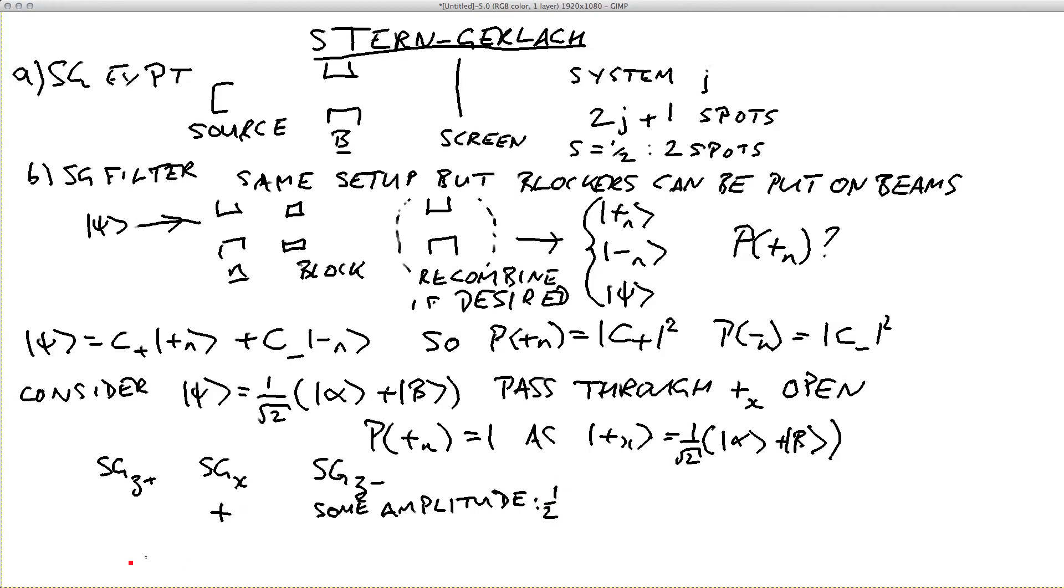If there is no blocker on the Stern-Gerlach filter in x, then the amplitude at the end will be zero. Because we will have started with a state in plus z, we will pass through the Stern-Gerlach x filter which will split the beams but then recombine them, thus not disturbing that initial eigenstate. When we measure the number of electrons in the Stern-Gerlach z minus, we will get zero.